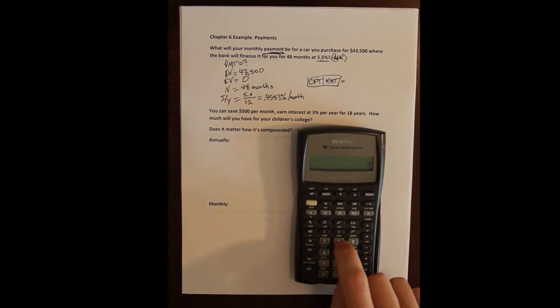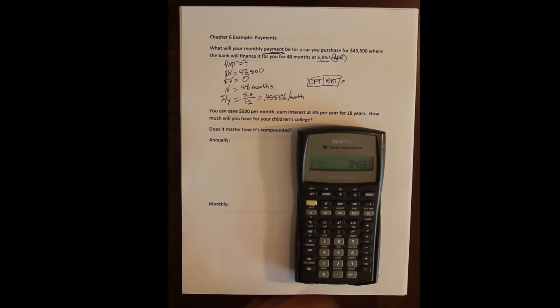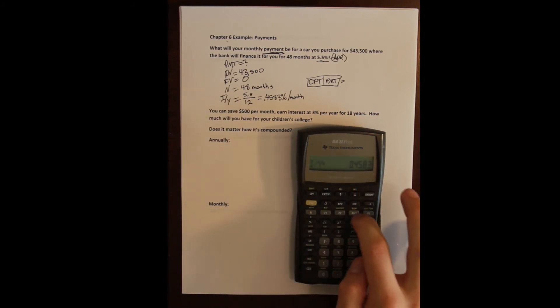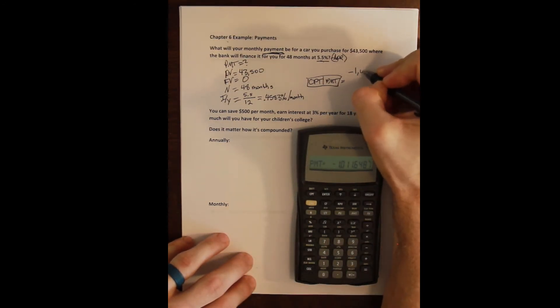Our N is forty eight months. So forty eight and then N. And then our IY, remember we are entering it as a percentage. So point four five eight three. And that's our IY.